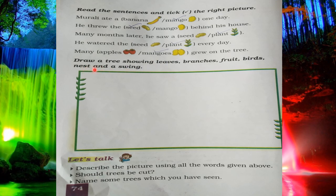Next question: 'Draw a tree showing leaves, branches, fruit, birds, nest, and a swing.' Class, in this space you have to draw a tree picture, and on that tree there will be leaves, branches, fruit, birds, nest, and also a swing. You have to draw this picture by yourself.